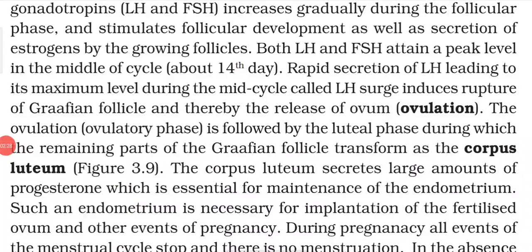LH and FSH increase gradually during the follicular phase and stimulate follicular development as well as the secretion of estrogen by the growing follicles. Both LH and FSH reach a peak level in the middle of the cycle, around day 14.